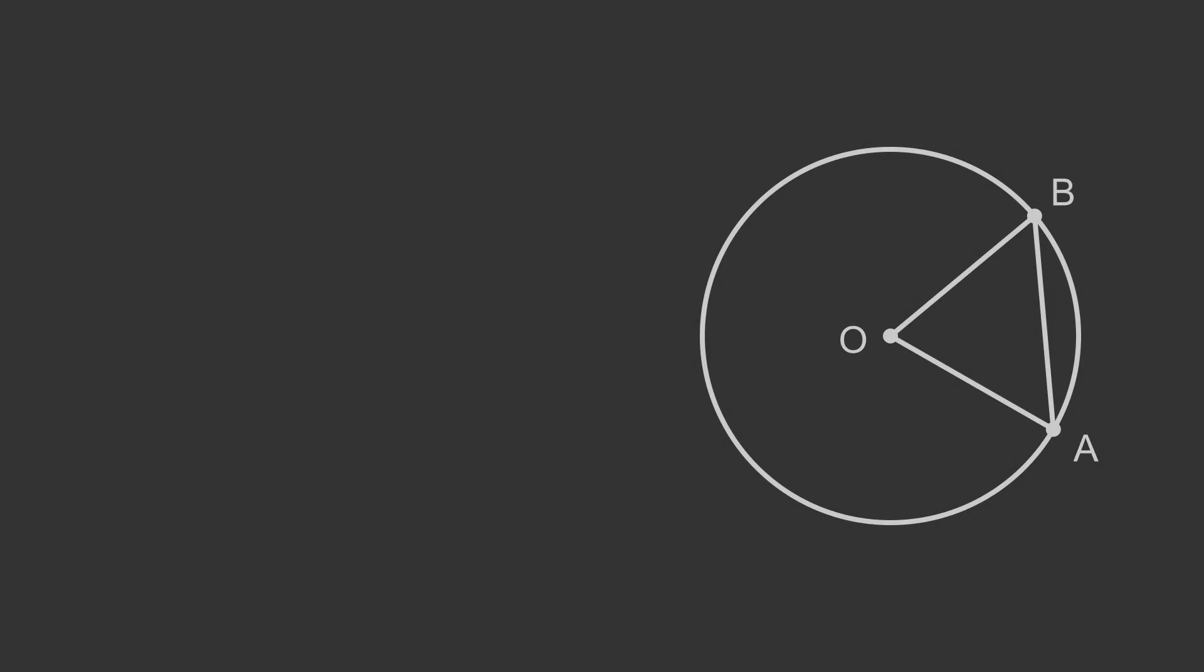The proof of this theorem is fairly straightforward and obvious. A radius of the circle is a line from the center O to the circumference. Every radius has the same length R.